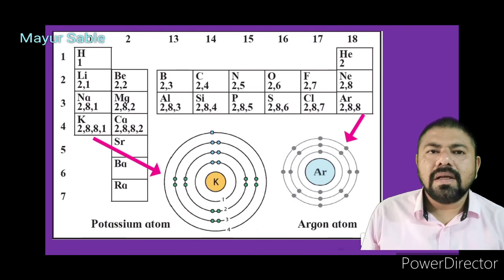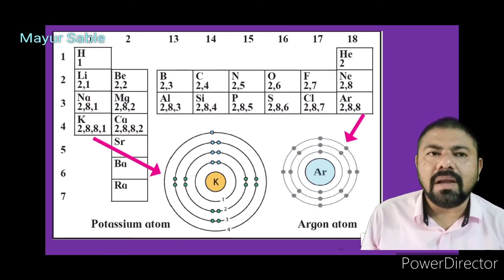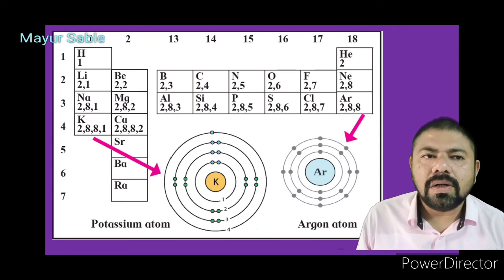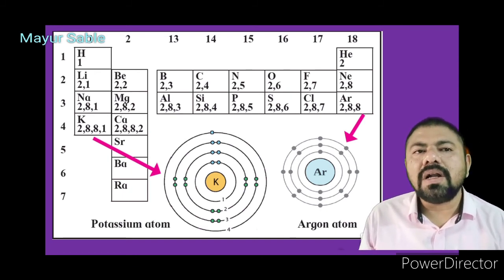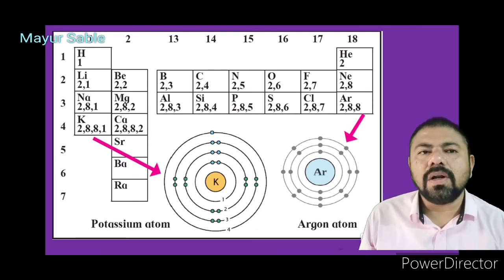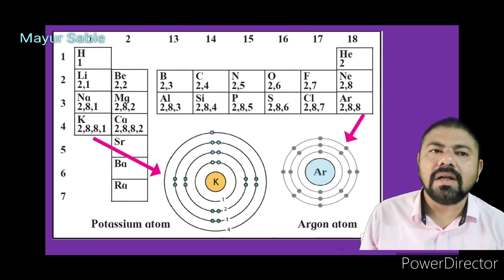The number of elements in the first period is determined by the electron capacity of the shell and the law of electron octet. As per the electron-holding capacity of the shell, two elements are present in the first period and eight elements in the second period. The third period also contains eight elements due to the law of the electronic octet. The chemical reactivity of an element is determined by the number of valence electrons and the shell number of the valence shell, and the modern periodic table has proved useful for the study of elements.